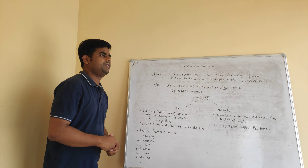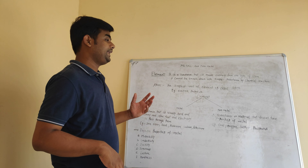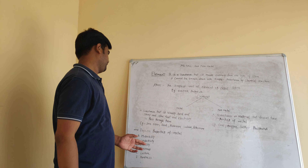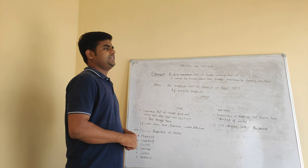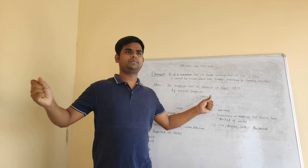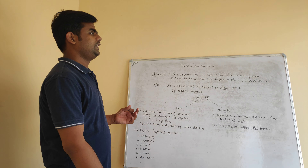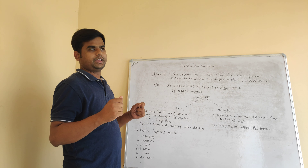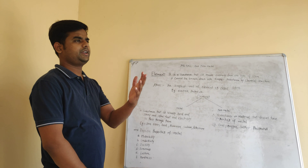Next is conductivity. Metal is a good conductor of heat and electricity — it allows heat and electricity to pass through it. Next is ductility. Ductility means we can convert metal into a thin wire. For example, silver or aluminum can be converted into thin wire. This is ductility — the process in which metals can be drawn into thin wires.